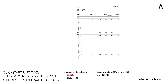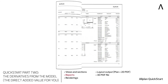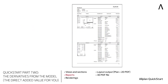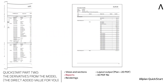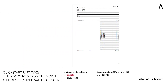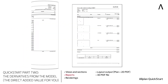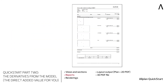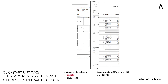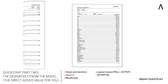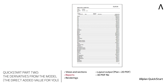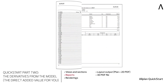Then the so-called reports, for the mass determination and output of calculations directly from the model — from the quantity determination of the drawn components, to the room schedules, to the living spaces, or gross space content calculations. You can look forward to more than 200 supplied reports that are waiting to be used by you.